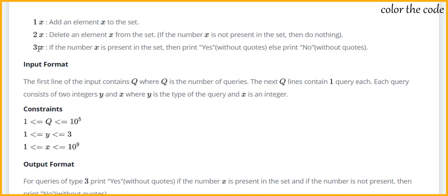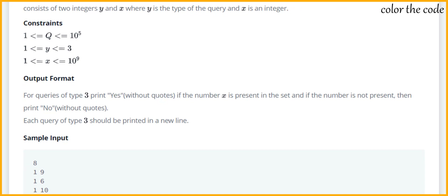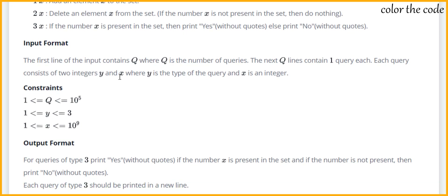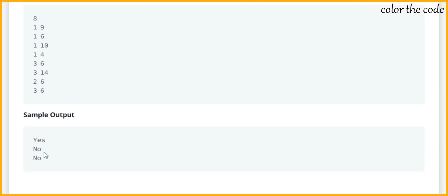After performing all operations, if we get query type 3 we need to check whether x is present in the set or not. If it is present we print 'Yes', and if it's not present we print 'No'. Our input consists of q which is the number of queries, then we are provided y and x — y will be the type of query (ranging from 1 to 3) and x is the integer. Our output should be 'Yes' or 'No', printed only when y equals 3.